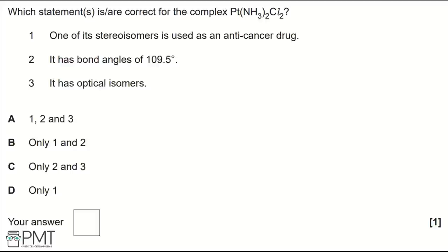Statement 1 is correct — one stereoisomer is used as an anti-cancer drug (cisplatin). Statement 2 is false — 109.5° is tetrahedral but the lone pairs on nitrogen mean this is incorrect. Statement 3 is false — optical isomers require 4 unique groups, but there are 2 NH₃ and 2 Cl groups. Our answer is only 1 — write D in the answer box.